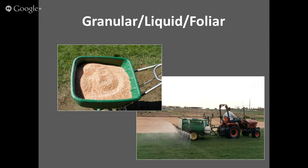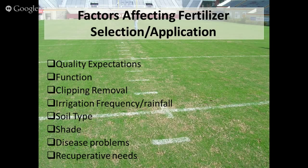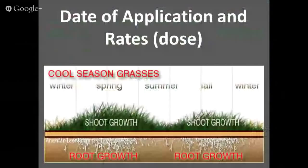What other factors affect your fertilizer selection? Quality expectations, the function, whether you're removing clippings, whether you have an irrigation system — many granular fertilizers require post-application irrigation to affect the release of nutrients. Soil type, shade, disease problems, and recuperative needs all matter. Looking at the growth pattern of cool-season grasses, you want to apply more granular fertilizers that are soil-targeted when you have actively growing roots — in spring and in fall. Trying to apply a lot of dry material to the root zone in summer months when roots are generally compromised by heat is not going to result in much interception and use by the plant.